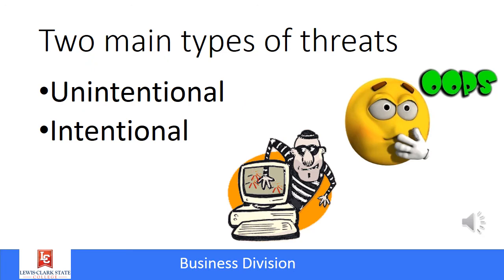There are two main types of threats that organizations and companies need to take seriously. The first one is the unintentional threat. An unintentional threat is usually the result of carelessness. The second is an intentional threat — that's an intentional intrusion, hack, or even theft.